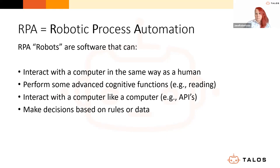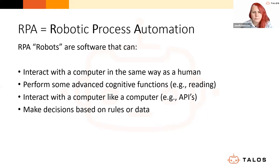The next level up is performing advanced cognitive functions. RPA robots can read structured and unstructured text documents such as emails, invoices, and contracts. By leveraging technologies such as Optical Character Recognition and Natural Language Processing, RPA bots can extract relevant information, make sense of it, and perform actions based on the data they pull out.